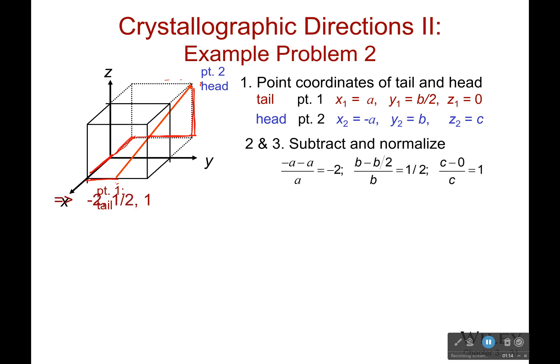Now I subtract them and divide each by a, b, or c. So I've got negative a minus a, so that's negative 2a over a. Well, that becomes negative 2. You can have negative numbers. And then you have b minus b over 2, which is 1 half b, and you divide that by b. And then you have c minus 0 over c, so it becomes 1. So negative 2, 1 half, 1.